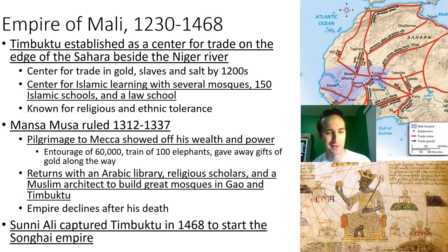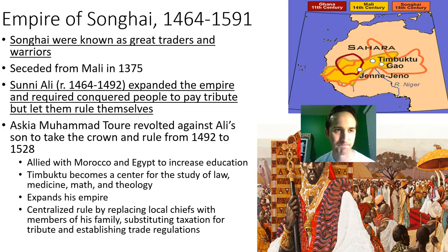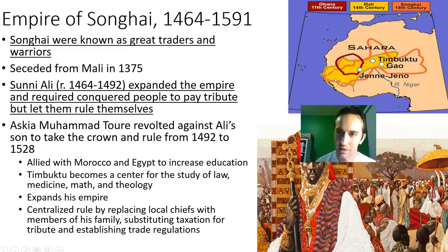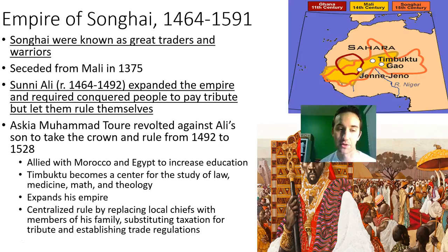Sunni Ali shows up, captures Timbuktu in 1468 to kind of start a new empire, marking the peak of the Mali empire and the rise of Songhai. After Mali we get the Songhai Empire, which you can see expanding even further on the map. They were known as great traders and great warriors — they first broke off from Mali and then completely overtook it.